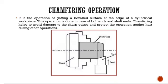Chamfering is the operation of producing a beveled surface at the end edge of a cylindrical workpiece. This operation is done on bolt ends and shaft ends. Chamfering helps avoid damage to sharp edges and protects the operator during other operations, imparting smooth edges at the end of the workpiece.